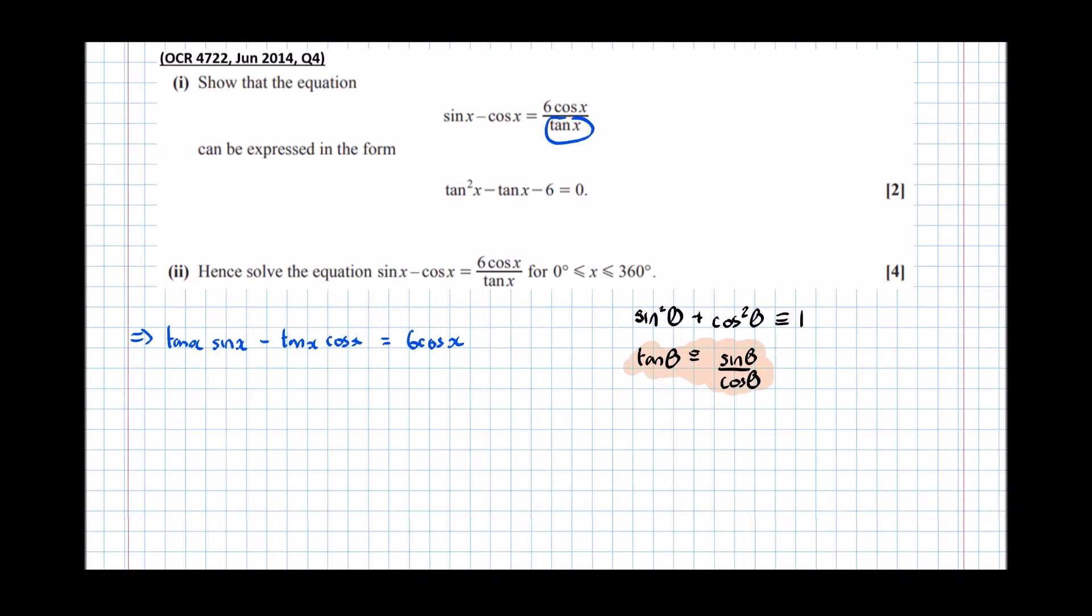Now I'm looking at that sign here, and I want to get more tans in there. So I notice that if I divide everything now by cos x, I can end up with tans using this identity here. Which implies that tan x sin x dividing that first term by cos x minus tan x cos x over cos x equals 6 cos x over cos x.